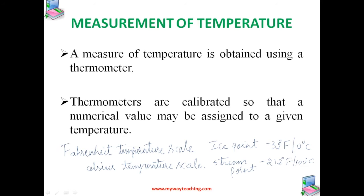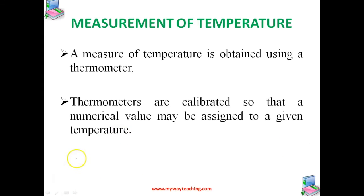On the Fahrenheit scale, there are 180 equal intervals between two reference points, whereas on the Celsius scale, there are 100 equal intervals.